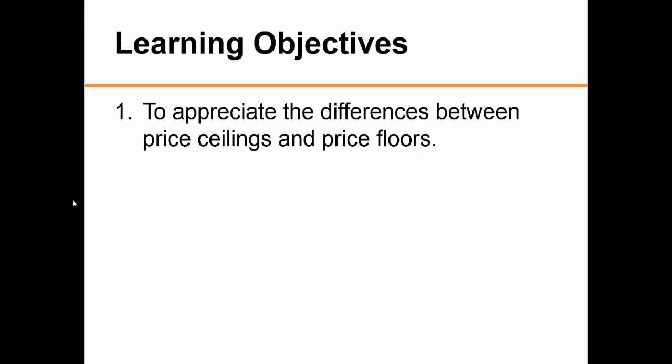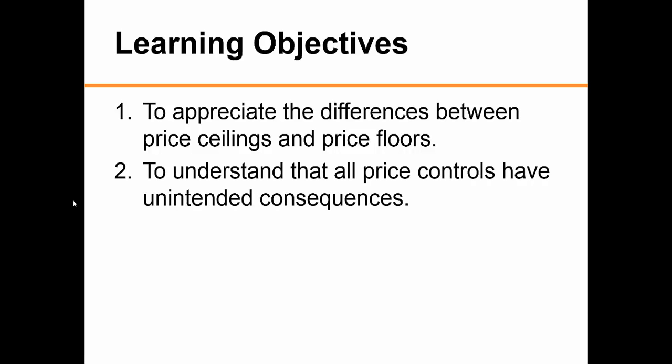The objectives of this chapter are to appreciate the differences between price ceilings and price floors, and also to understand that price controls have unintended consequences. Loosely defined, this means that often a policy has unforeseen results that are often harmful — an economic irony — and these unintended consequences mean that policy can actually hurt the very people it was supposed to help.